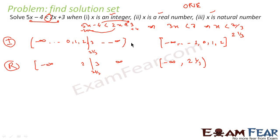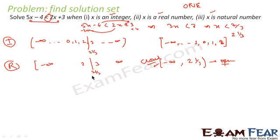In the integer case, 2 is included because 2 satisfies the condition, so we use a closed interval at 2. Please note open and closed intervals are mandatory here — a lot of people miss this and it is crucial. This is open at 2⅓ because 2⅓ is not part of x. Had the equation been x is less than or equal to 7 by 3, we would have given a closed interval there.